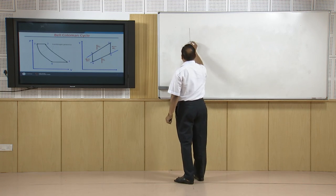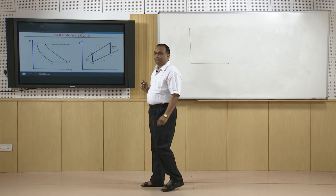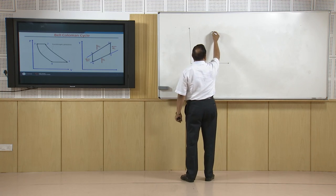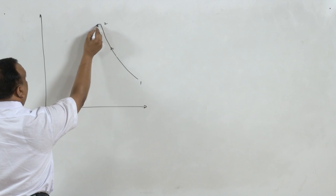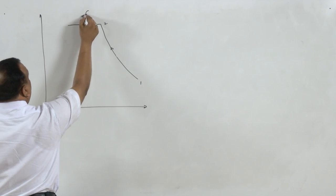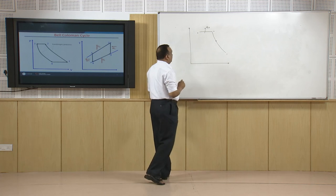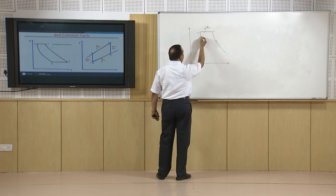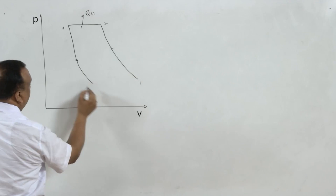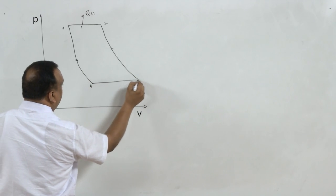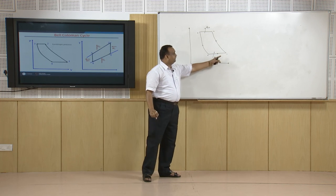In this cycle, shown on the PV diagram, first compression of air takes place from state 1 to state 2. After compression, cooling of air takes place — heat is removed from the air and the temperature goes down. When state 3 is attained, expansion takes place inside an expander or turbine. Processes 3 to 4 and 1 to 2 are isentropic, and process 4 to 1, where heat is taken from the surroundings, produces the cooling effect.